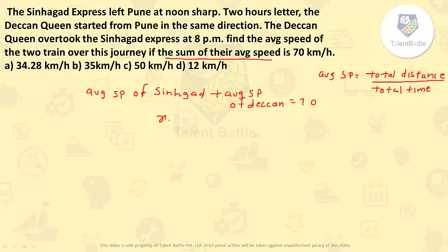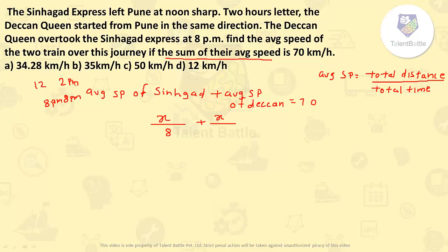Let me consider the distance travelled by Sinhagad as x. Sinhagad Express left Pune at noon — that is 12 o'clock — and two hours later Deccan Queen started, so Deccan Queen started at 2 p.m. The Deccan Queen overtook Sinhagad Express at 8 p.m., so both trains meet at 8 p.m. Time taken by Sinhagad Express is 8 hours; time taken by Deccan Queen is 6 hours since it started at 2 and reached at 8. Distance is the same x for both, and the sum equals 70.